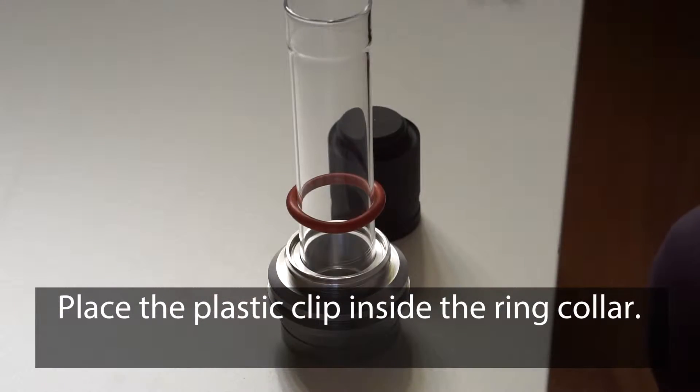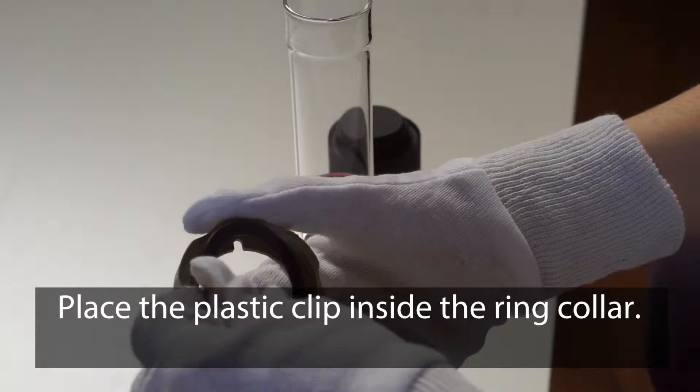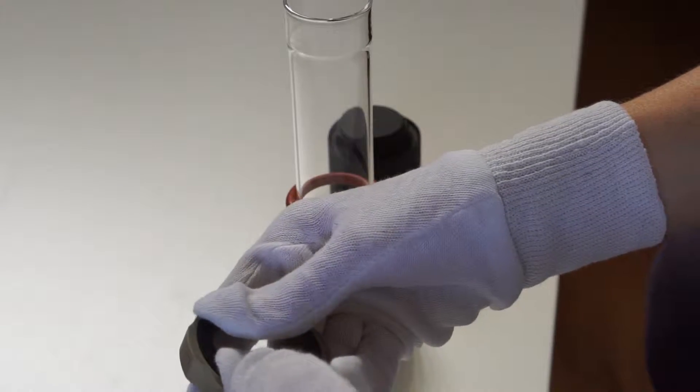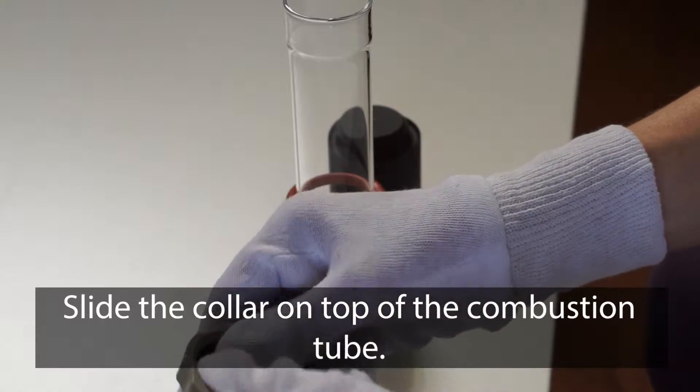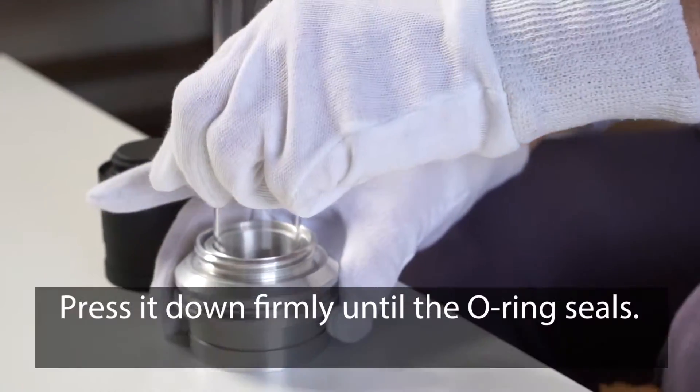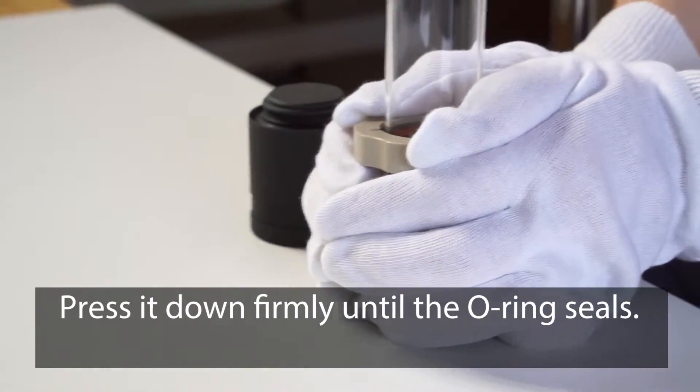Place the plastic clip inside the ring collar, slide the collar on top of the combustion tube and press it down firmly until the o-ring seals.